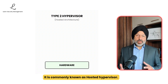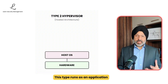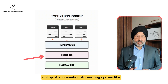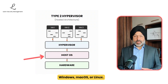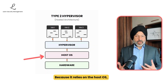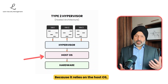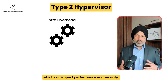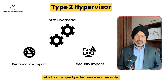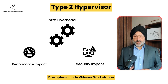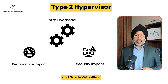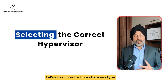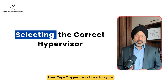Then there is the type 2 hypervisor, commonly known as a hosted hypervisor. This type runs as an application on top of a conventional operating system like Windows, macOS, or Linux. Because it relies on the host OS, a type 2 hypervisor introduces extra overhead, which can impact performance and security. Examples include VMware Workstation and Oracle VirtualBox.